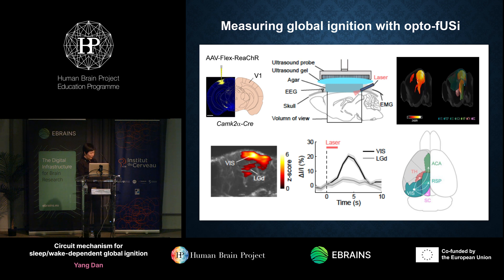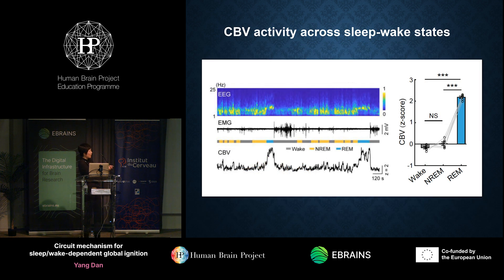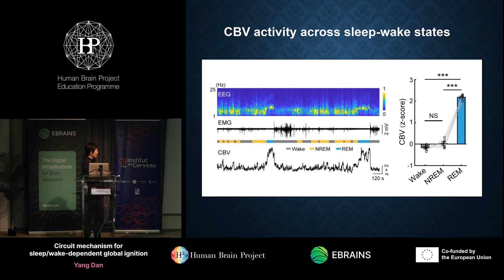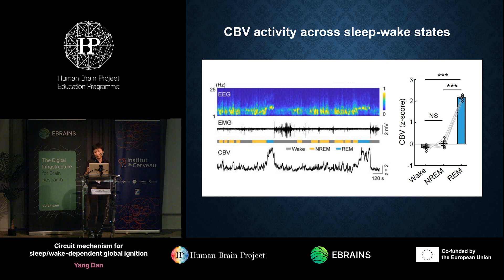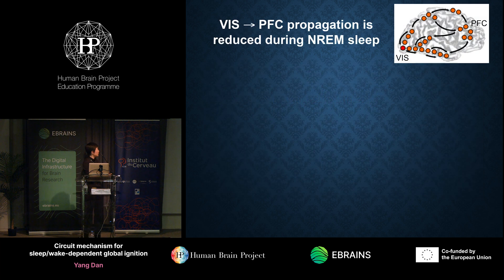In each recording session, we also measured EEG and EMG, which allowed us to monitor the natural sleep-wake cycle of the mice. Here I'm showing the spectral powergram of the EEG and the EMG trace, with color-coded brain states classified based on EEG and EMG. Mice have very fragmented sleep — they flip in and out of the three brain states every few minutes. Looking at the cerebral blood volume (CBV) signal averaged across multiple brain regions, it's generally much higher during REM sleep compared to both wakefulness and non-REM sleep, consistent with published papers.